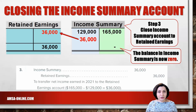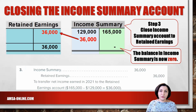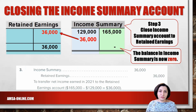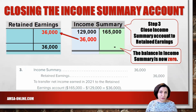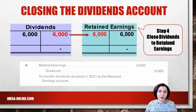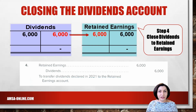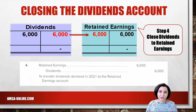Next, net income must be transferred from income summary to retained earnings. Income summary has a credit balance of $36,000. To close this account, income summary must be debited for $36,000 and a credit must be made to retained earnings for that amount. Income summary now has a zero balance and net income appears on the credit side of retained earnings. Credits to retained earnings increase the account balance. The final closing entry deals with dividends. The dividends account has a debit balance, so a credit is made to the dividends account and a debit to retained earnings, transferring $6,000 to the retained earnings account.